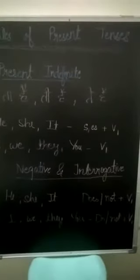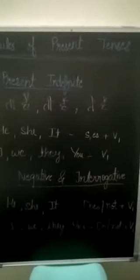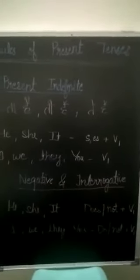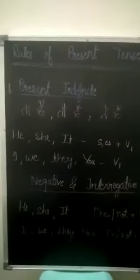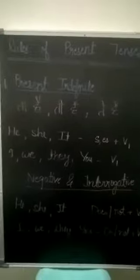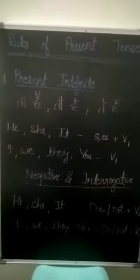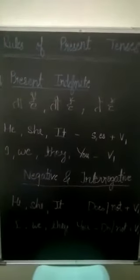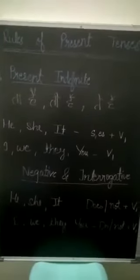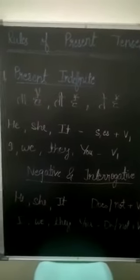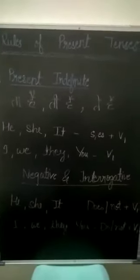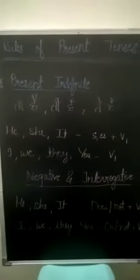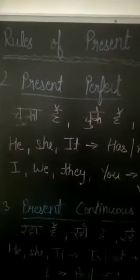If we talk about negative and interrogative sentences in present indefinite — negative sentences (with 'not') and interrogative sentences (question mark sentences) — the rule is different. With he, she, it, we use 'does' or 'does not' plus the first form of the verb. With I, we, they, and you, we use 'do' or 'do not' plus the first form of the verb.